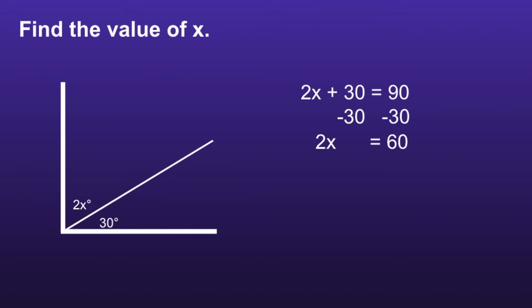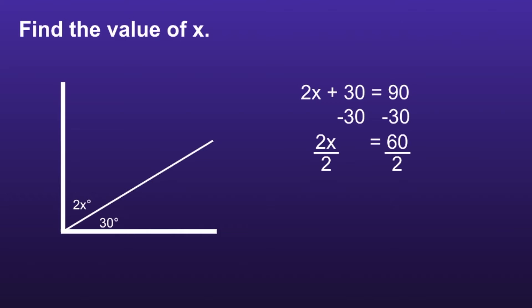The second step is to undo any multiplication or division. There's a 2 in front of that x — this is called a coefficient, which is a number being multiplied by a variable. So that x is being multiplied by 2. We want to do the opposite of that on both sides. The opposite of multiplying by 2 is dividing by 2. 2x divided by 2 is just x, and 60 divided by 2 is equal to 30. So x is equal to 30.